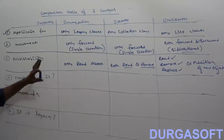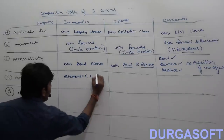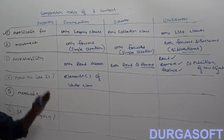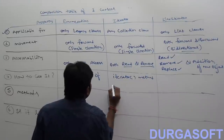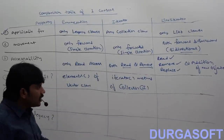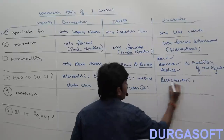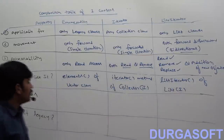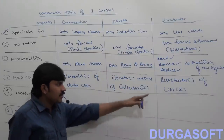How do we get each cursor? To get enumeration, we use the elements() method of the Vector class. To get iterator, we use the iterator() method of the Collection interface. To get list iterator, we use the listIterator() method of the List interface.